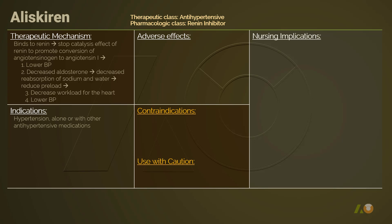Aliskiren is indicated for hypertension only. It may be used alone or in combination with other medications to treat hypertension.